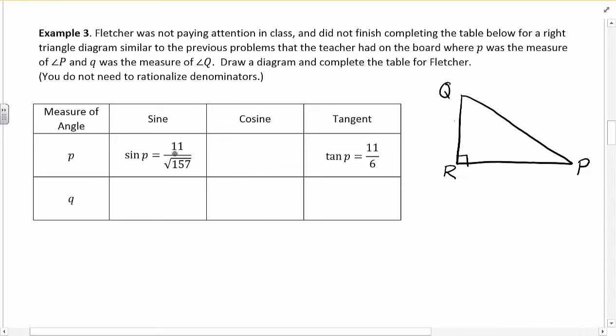So sine P is opposite over hypotenuse. So that might indicate that this fraction is telling me the opposite side is 11 and the hypotenuse is root 157. So let's give that a shot. Opposite 11 hypotenuse root 157. And then it tells me that the tangent of P, which is opposite over adjacent TOA, tan P is 11 over 6. So opposite is 11. Well, that still works. Adjacent is 6. That seems to work too. And if I check to make sure that this makes an actual right triangle, 11 squared plus 6 squared, does that equal 157? Let's find out. 11 squared is 121, 36. Yep, that's 157. So this is a legit right triangle. So there's the diagram.